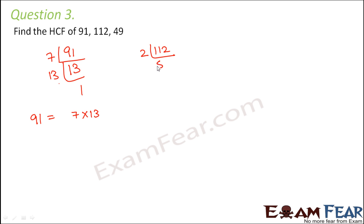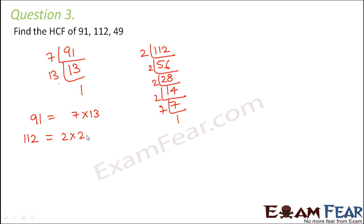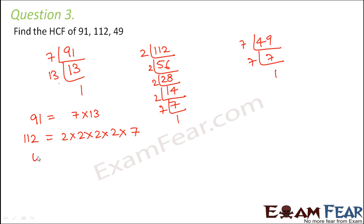Next is 112. So 112 can be written as 2 into 2 into 2 into 2 into 2 into 7. The third number, 49, can be written as 7 into 7.